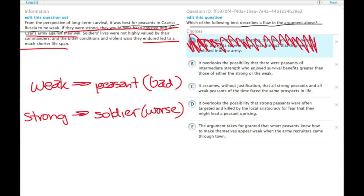Choice B: It overlooks the possibility that there were peasants of intermediate strength who enjoyed survival benefits greater than those of either the strong or the weak. So if being weak leads to being a peasant and that's bad because then you're weak and a peasant, but if you're strong you end up being a soldier, if there is an intermediate category here where you could be something else that's not bad and not worse, that actually would be a flaw in the argument.